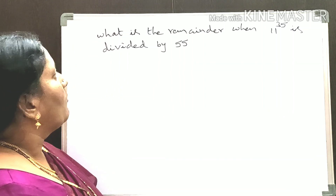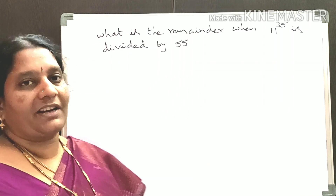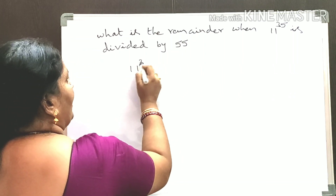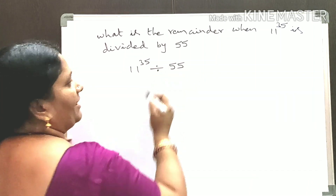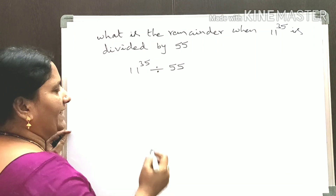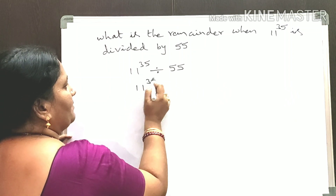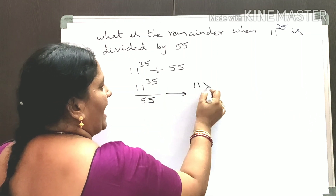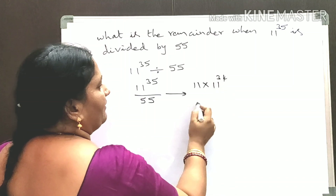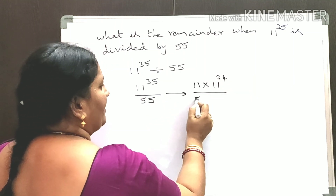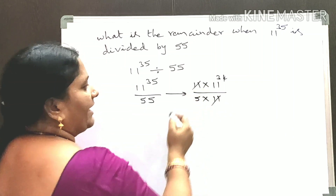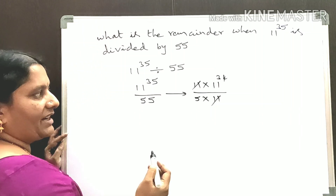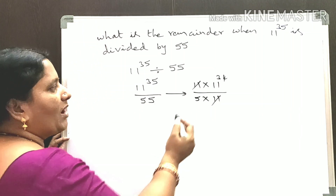Now the next question is: what is the remainder when 11 to the power of 35 is divided by 55? We can write 11 power 35 as 11 into 11 to the power of 34, with denominator 55 equal to 5 into 11. We can cancel 11 in numerator and denominator, so we need to find the remainder when 11 power 34 is divided by 5.